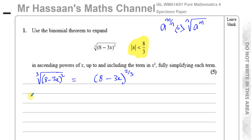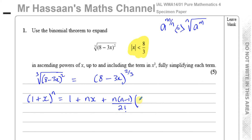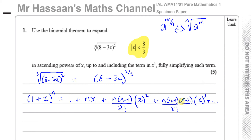The binomial expansion is found under P2 in the formula book. If you have something in the form (1 + x) to the power n, that gives you: 1 + nx + n(n−1) over 2 factorial times x squared + n(n−1)(n−2) over 3 factorial times x cubed + n(n−1)(n−2)(n−3) over 4 factorial times x to the power 4, and so on in that pattern.